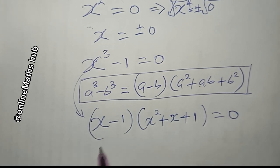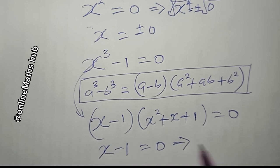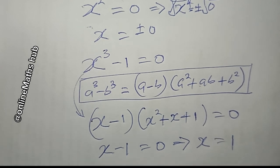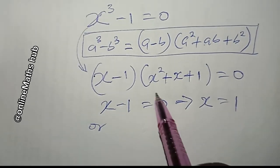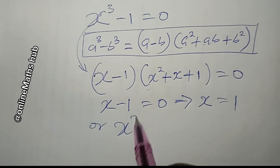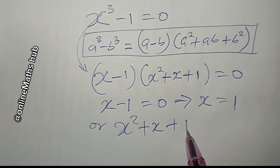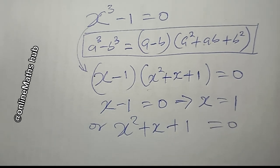From here, x minus 1 equals zero, which implies x equals 1. The second factor gives us x squared plus x plus 1 equals zero.